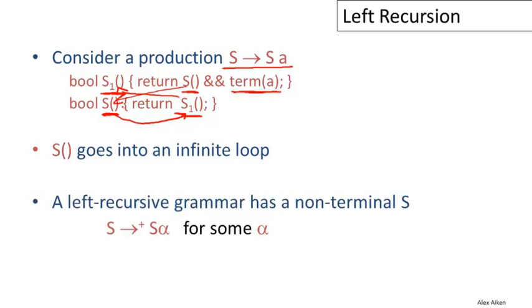So the reason that this grammar doesn't behave very well is because it is left recursive. And a left recursive grammar is any grammar that has a non-terminal, where if you start with that non-terminal and you do some non-empty sequence of rewrites, notice the plus there, you have to do more than one rewrite. So if you actually do a sequence of replacements, you get back to a situation where you have the same symbol still in the leftmost position.